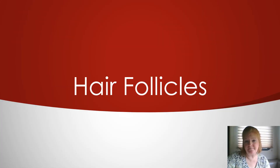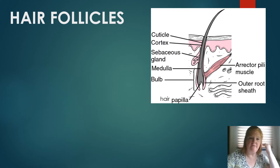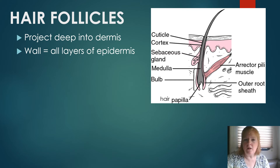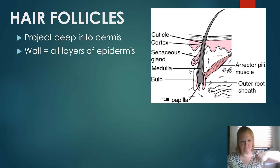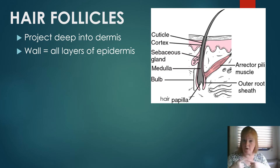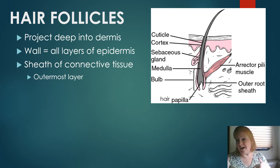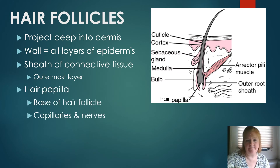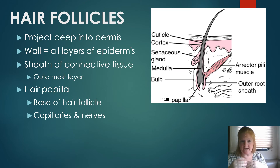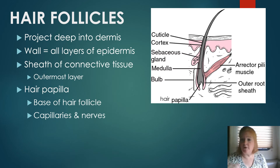Hair follicles project deep into the dermis. The wall of a hair follicle is made of all the layers of the epidermis — the epidermis essentially folds inward to form each follicle and then continues on. There's a sheath of connective tissue around that for protection. At the base, there's a papilla — the bulb-like structure at the base of the follicle — which contains capillaries and nerves, providing both sensation and blood supply.